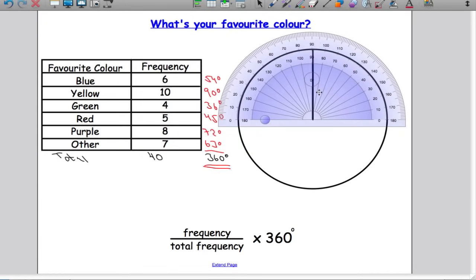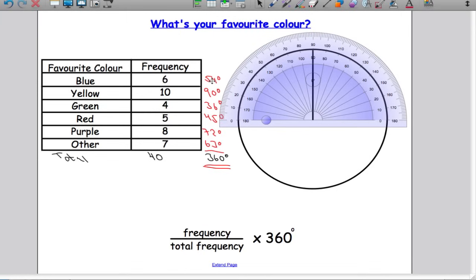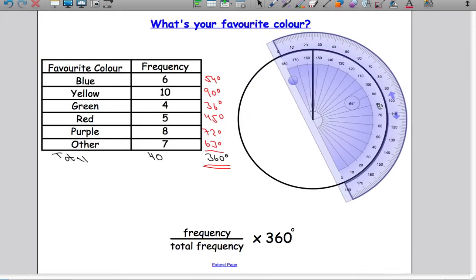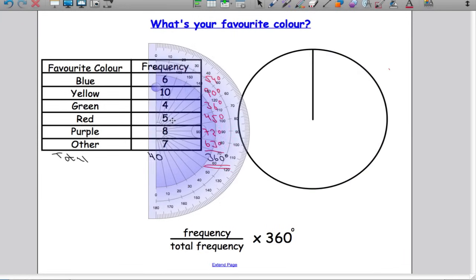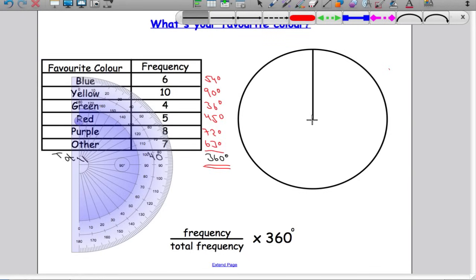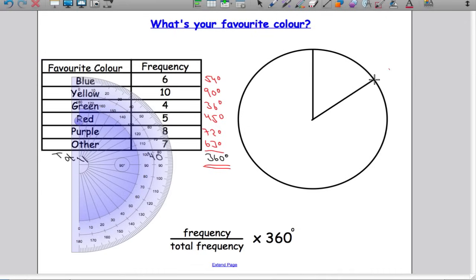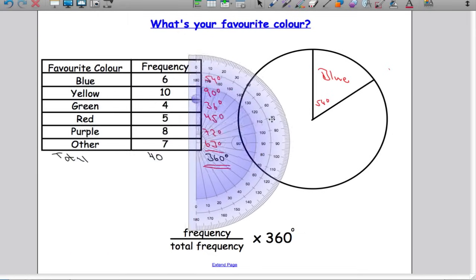Next thing we've got to do is get out our protractor and we're going to start drawing in our segments. We need an angle of 54 degrees. Turn your protractor so that you're measuring from zero, which is right up here in this case, and I need an angle of 54 degrees. Following around from 0, 54 degrees is going to be around about there. Take your ruler and draw an angle of 54 degrees. Important to label it: 54 degrees, and that is for blue.